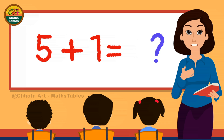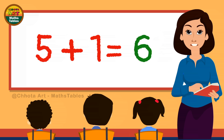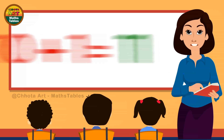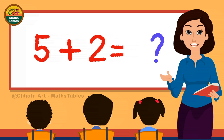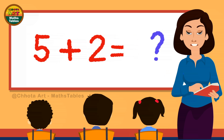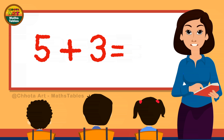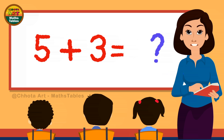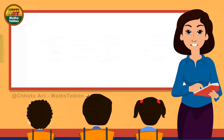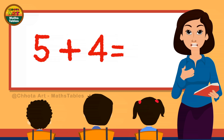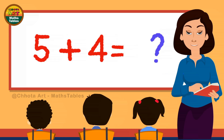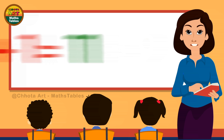5 plus 1 is 6. 5 plus 2 is 7. 5 plus 3 is 8. 5 plus 4 is 9. 5 plus 9 is 14. 5 plus 10 is 15.